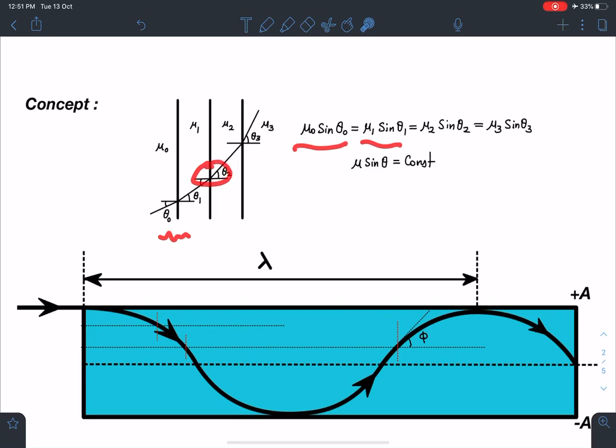So for first interface mu0 sin theta0 is equal to mu1 sin theta1. Similarly at second interface mu1 sin theta1 is equal to mu2 sin theta2 using Snell's law. So directly we can say all these values are equal for n number of mediums or in general I can say this mu sin theta is constant where theta is angle made by this light ray with the normal at every interface.